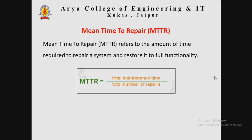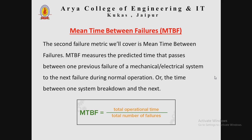There are three types of mean time metrics. The first is Mean Time to Repair (MTTR), which refers to the amount of time required to repair a system and restore it to full functionality. Mathematically, MTTR is equal to total maintenance time divided by the total number of repairs.